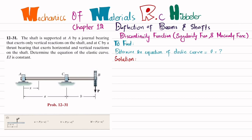If you remove the thrust bearing, you will have a reaction force acting upward — let this force be Rcy — and also Rcx. If you remove the journal bearing at A, you will have a reaction force RA acting downward. We will find these forces using the equations of equilibrium.